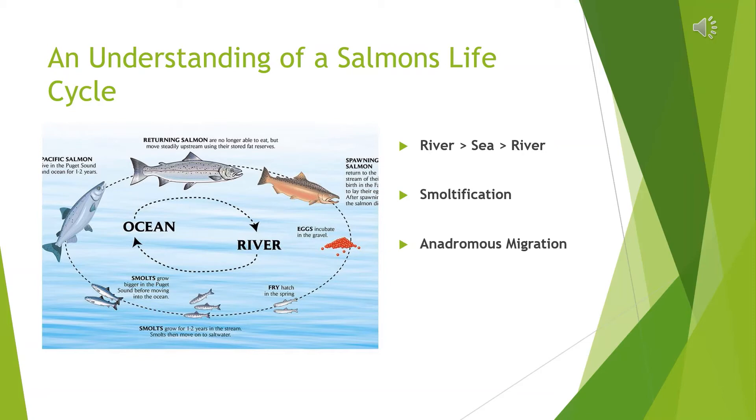When salmon reach adulthood, they migrate upriver or stream where they lay their eggs on small gravel beds. When the eggs hatch, the salmon migrate downstream to the ocean where they will remain for roughly three to five years.